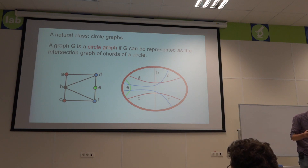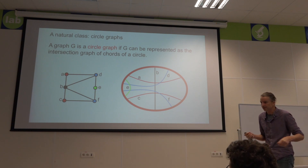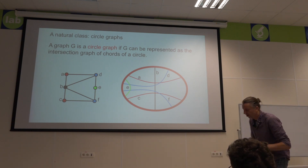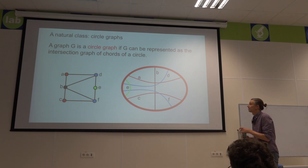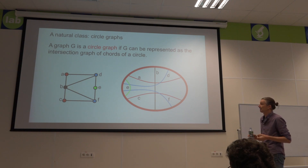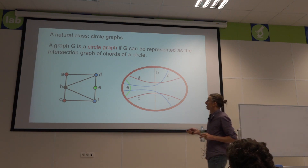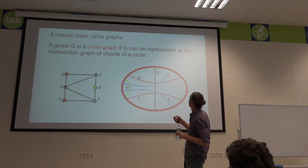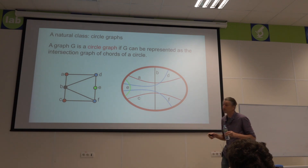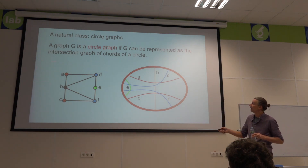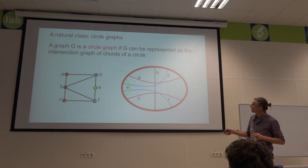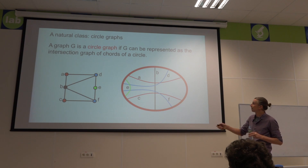This local complementation operation is very natural for circle graphs. A graph is a circle graph if it can be represented as the intersection graph of chords on a circle — each vertex corresponds to a chord, and two vertices are adjacent if and only if their chords cross. The class of circle graphs is closed under local complementation.